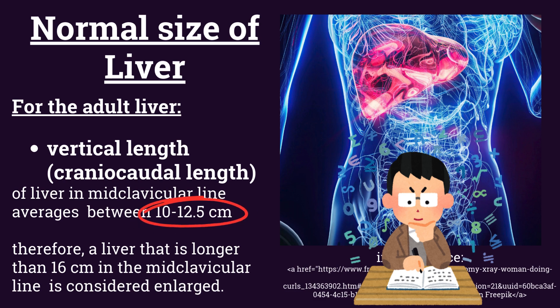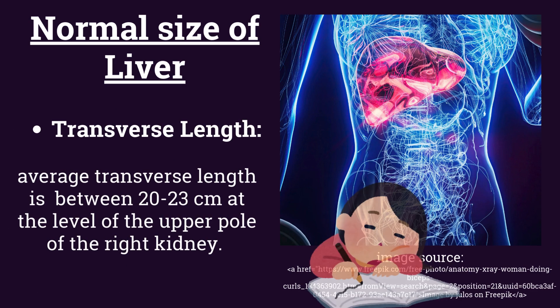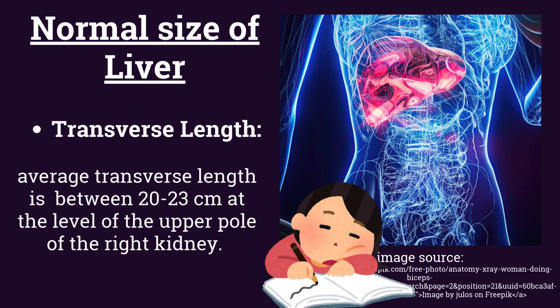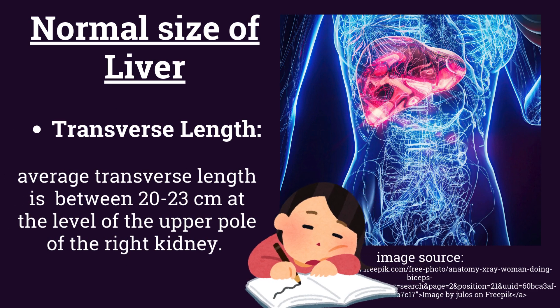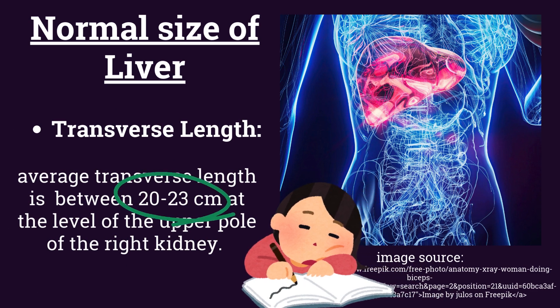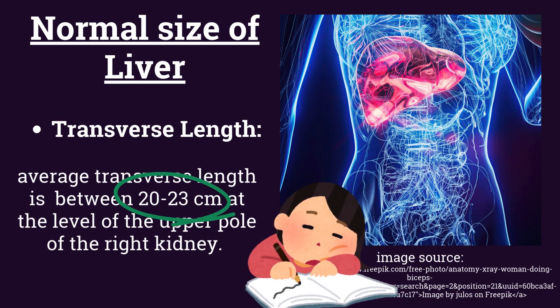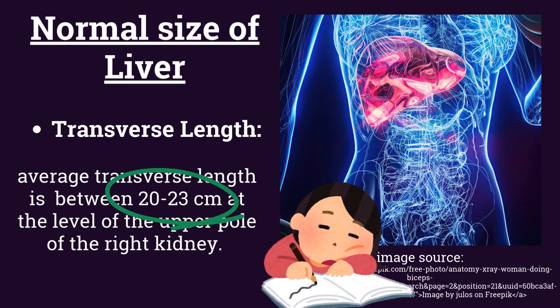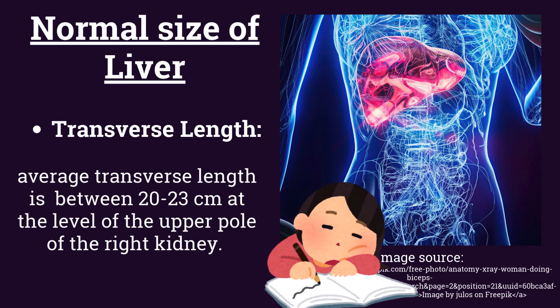Therefore, a liver that is longer than 16 centimeters in the mid-clavicular line is considered enlarged. In the case of transverse length, the average transverse length is between 20 to 23 centimeters at the level of the upper pole of the right kidney.